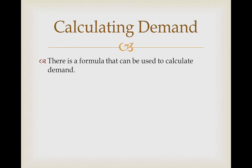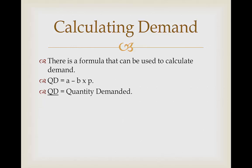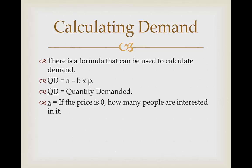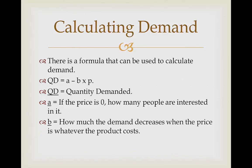Calculating demand. There is also a formula we can use to calculate demand: QD equals A minus B times P. QD stands for quantity demanded. A represents the quantity demanded when price is zero — essentially how many people are interested in the product and would want it if it were free. B represents how much demand will decrease when the price is set. P is the price. You likely won't be asked to calculate this in the exam, but if you are, remember the formula: QD = A − B × P.